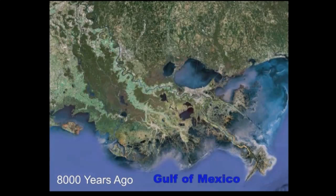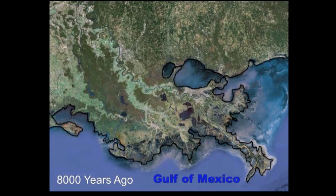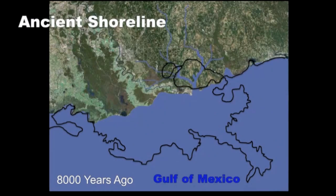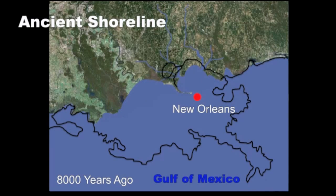Because glaciers were melting 8,000 years ago, sea levels were higher at that time, so much of the present-day coast was under water. Where New Orleans is located today was also under the sea. Sea level continued rising, forming a bay that would ultimately become Lake Pontchartrain.